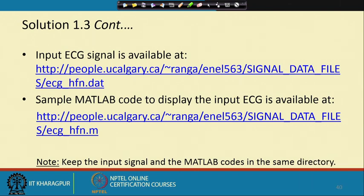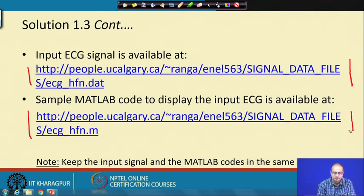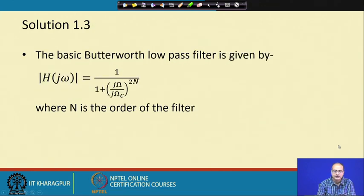First we need to get the signal — it is given here. We have the code, and we remind you that we need to keep the input signal and the MATLAB code in the same directory. The first part of the solution is to look at the basic structure of the Butterworth filter.